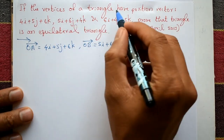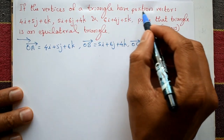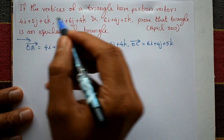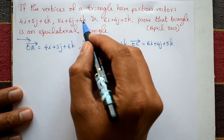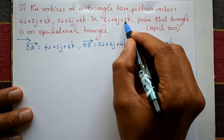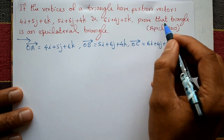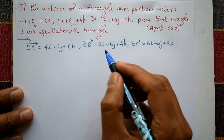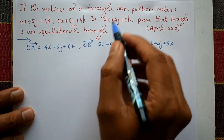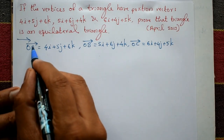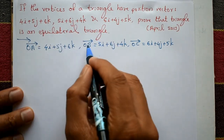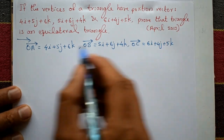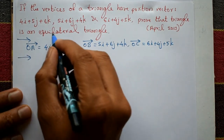If the vertices of a triangle have position vectors 4i + 5j + 6k, 5i + 6j + 4k, and 6i + 4j + 5k, prove that the triangle is an equilateral triangle. The position vectors are given: first is OA, second is OB, and third is OC.